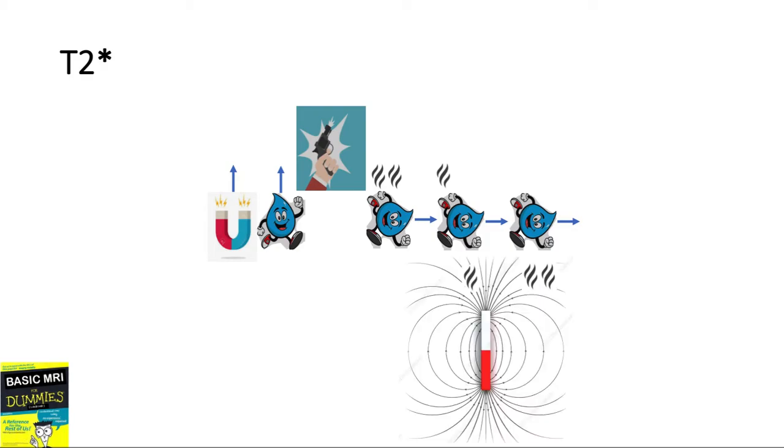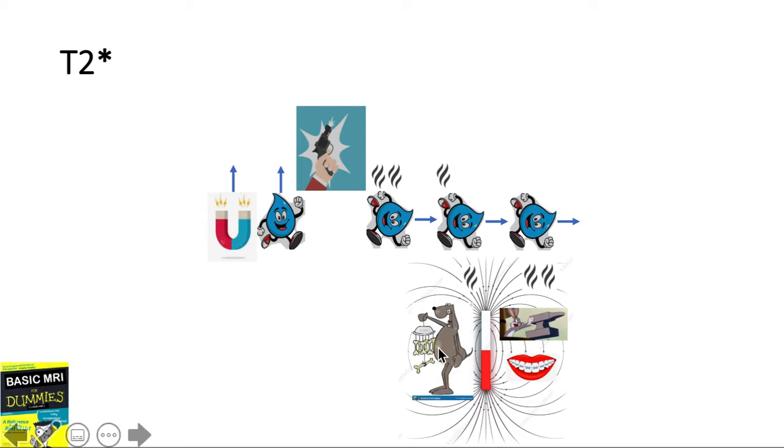T2 star property refers to the loss of the protons transverse magnetization due to non-uniform magnetic field. Say, for instance, we have here a metallic object or dental implants or presence of air bone interface which would create a non-uniform magnetic field.